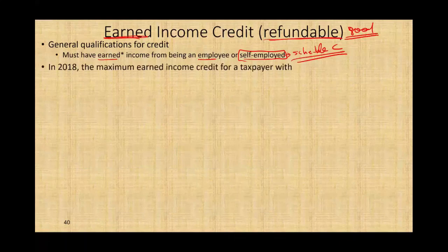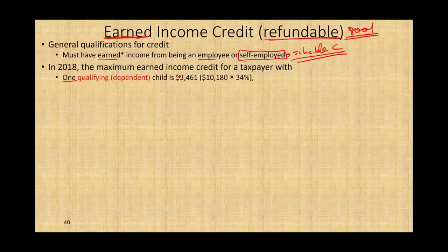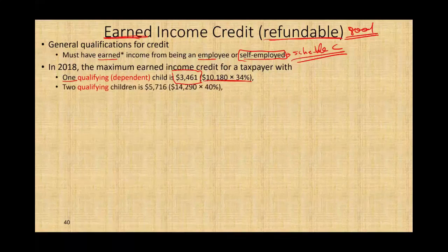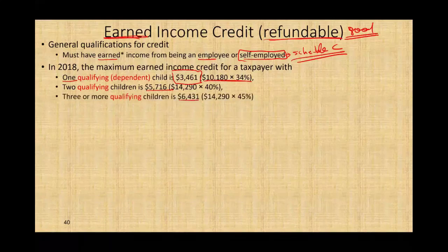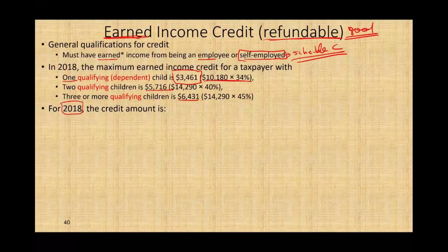In 2018, the maximum Earned Income Credit for a taxpayer with one child is $3,461. If you have two qualifying children, the credit is $5,716. If you have three qualifying children, it's $6,431. Notice the more children you have, the more the government is willing to help you. Those are 2018 numbers; in 2019 the numbers will change a little bit, adjusted for inflation.